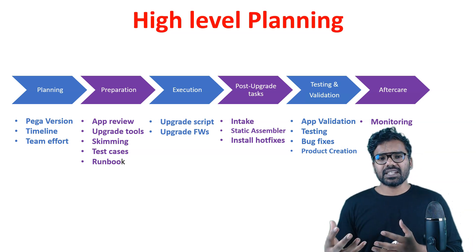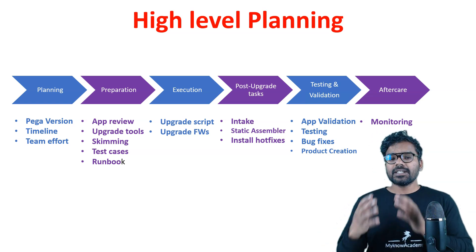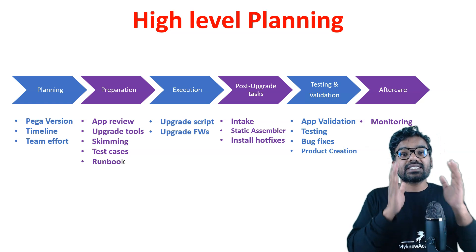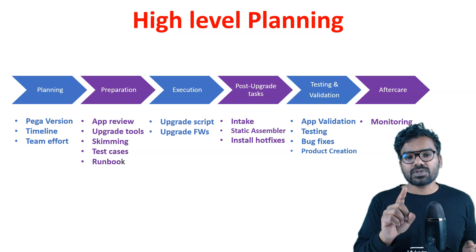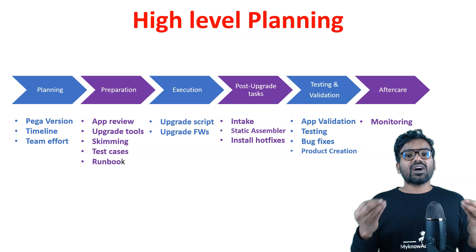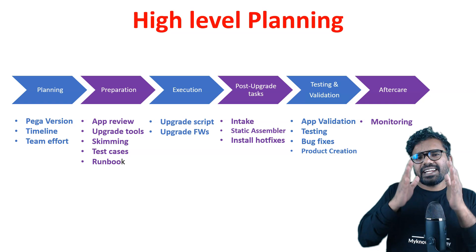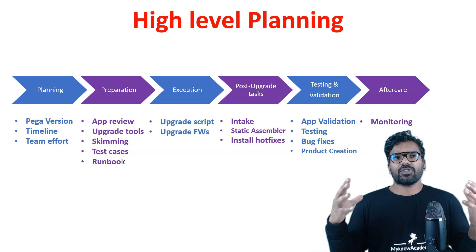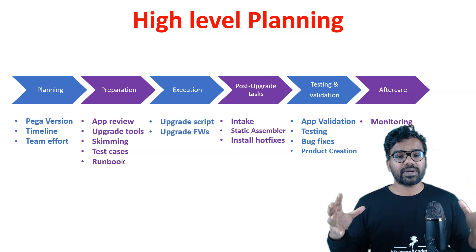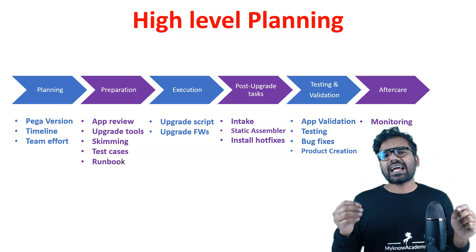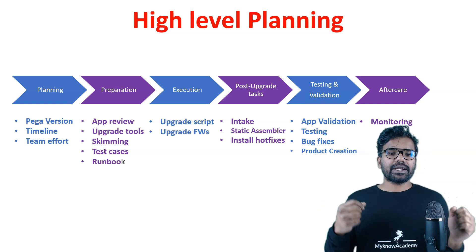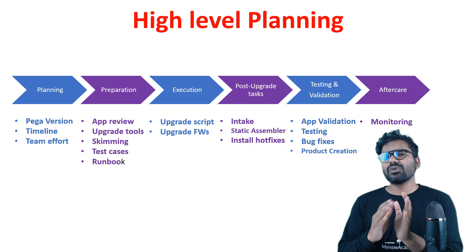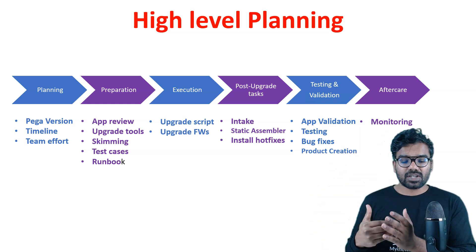When you do the app review, you can check the guardrails — how the UI guardrails look and how much customization was done. That plays a very critical role in your upgrade journey and can impact your upgrade duration. Additionally, Pega officially provides an upgrade checker tool — it is mandatory that you make use of it. The outcome of that tool can also impact your duration. You can also plan for skimming: if you have a heavy rule base, skimming can help you have a more lightweight rule base before a major upgrade.